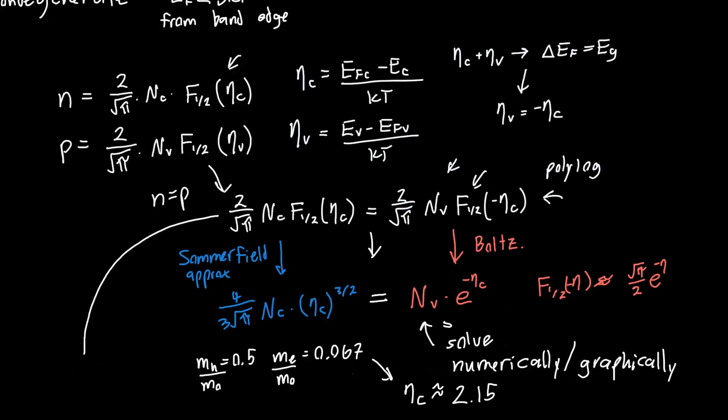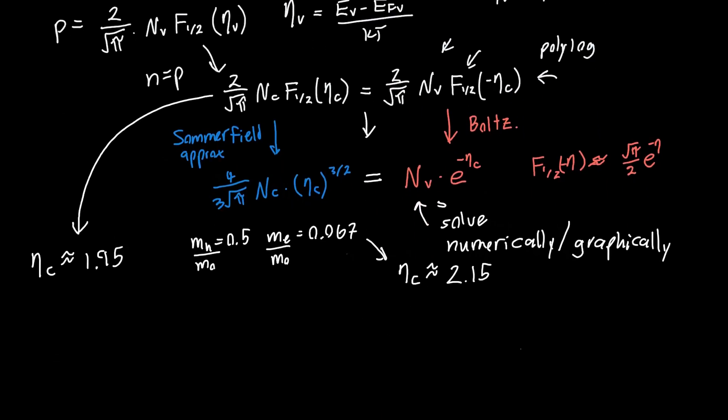Now, if you were to use the exact equation, you'd get a value for eta c of about 1.95, so the error isn't too much. We can plug in this value of eta c into our equation for the transparency carrier density, and you'll get a transparency carrier density for this example of about 1 times 10 to the 18 per cubic centimeter, and this is a fairly typical value.